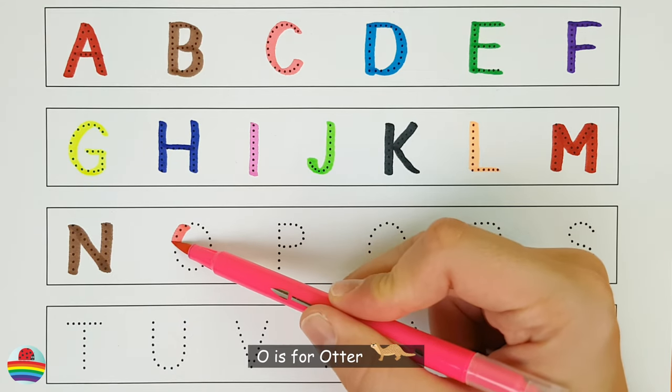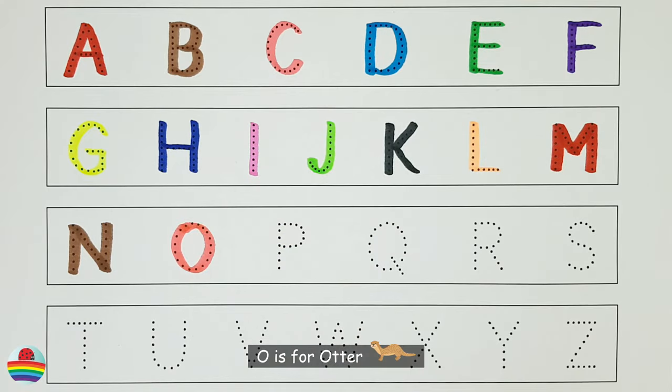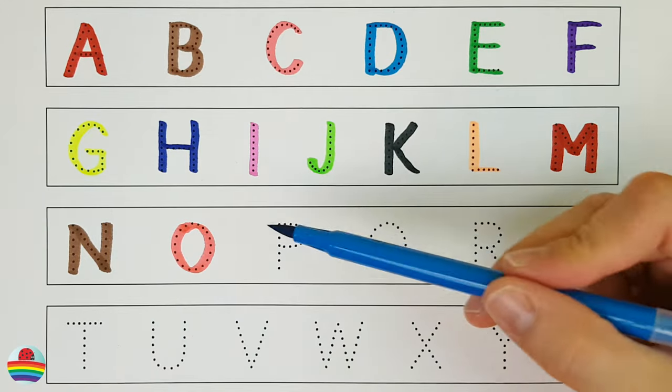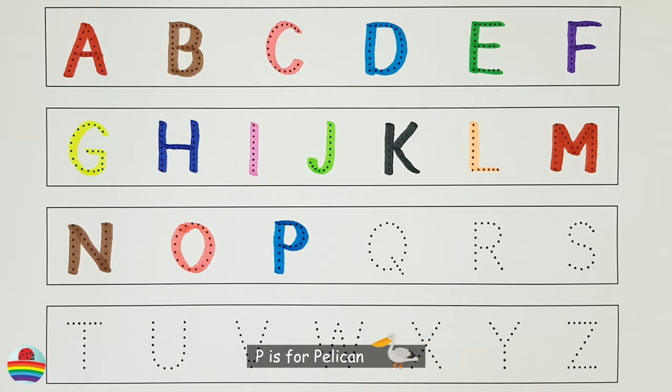O. O is for otter. O. P. P is for pelican. P.